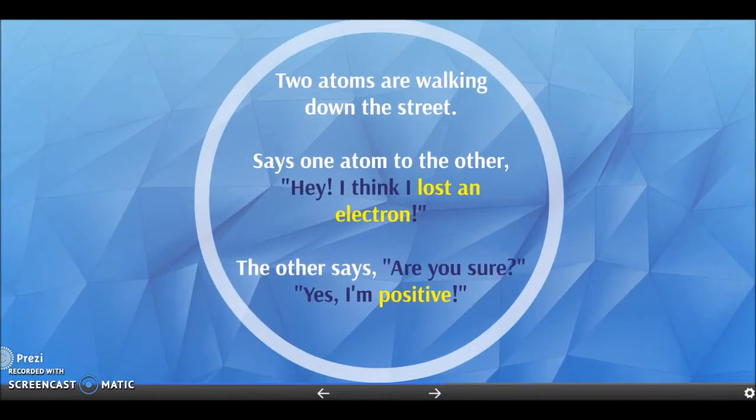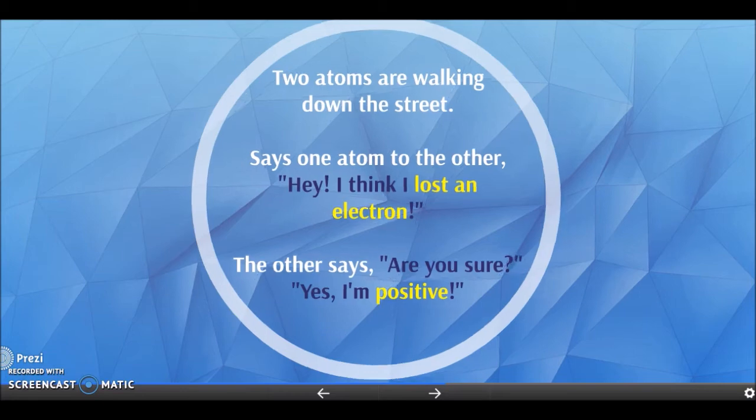Let's pause for a little story. Two atoms are walking down the street. 'Hey, I think I lost an electron!' 'Are you sure?' 'Yeah, I'm positive!' Again, cheesy—I just love these cheesy chemistry jokes. When a group of chemically bonded atoms gain or lose electrons, they are called polyatomic ions.